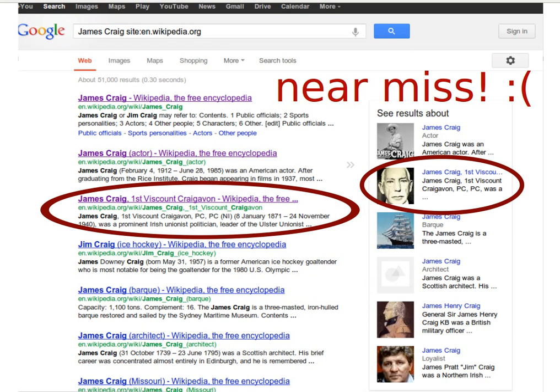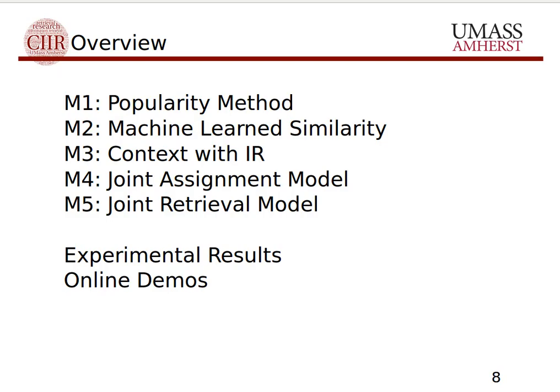This example should tell you that entity linking is not an easy problem, but we will talk about different algorithms that would actually get it right. This talk is to be understood as a set of cooking ingredients for entity linking solutions. Modern entity linking systems are actually a mix of all five algorithms I will talk about. I will also give you some experimental results so you see in numbers how these methods work with respect to each other, and I will conclude with some online demos.